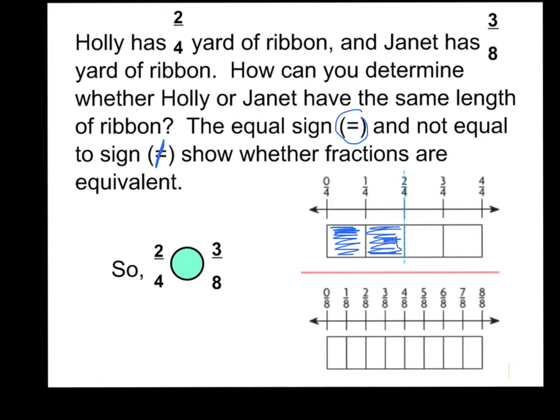I can use fraction bars. I can shade in two fourths of this fraction bar. Now, if I cut these fourths into eighths, which is just cutting each of my fourths in halves to have eight equal parts, and if I shade in three eighths for Janet, can you see, based on my fraction bars, who has the greater amount? I can see that it looks to me like Holly, that has two fourths yards of a ribbon, has a little bit bigger of a ribbon than Janet. So I could say that Holly and Janet, their ribbons are not equal.